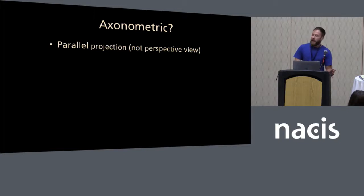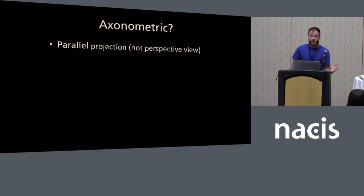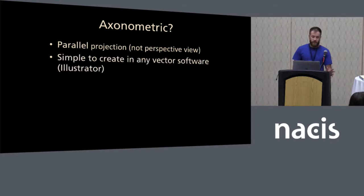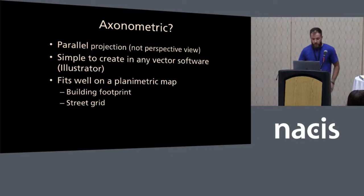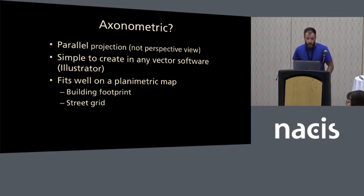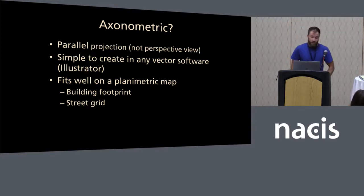So what is exonometric? I didn't really know what it meant when I put it on the title, and after researching it, I still don't really know what it means. Just know that it's not perspective view — in perspective view, lines in the distance kind of converge on each other and vertical lines aren't necessarily vertical. In exonometric, vertical lines stay vertical, which makes it simpler and easier to create. They are simple to create in any vector software, will fit well on a planometric map using building footprints, which are easy to find anywhere.